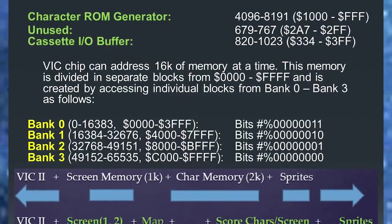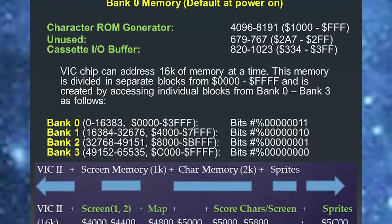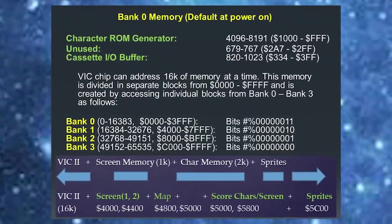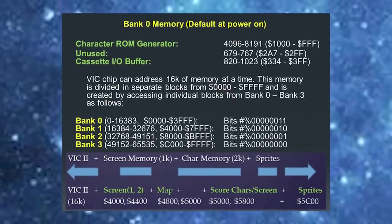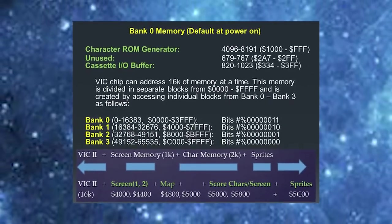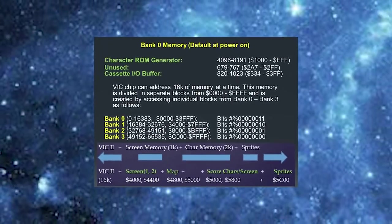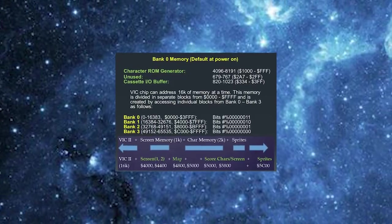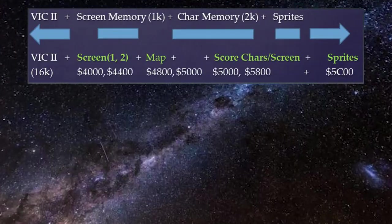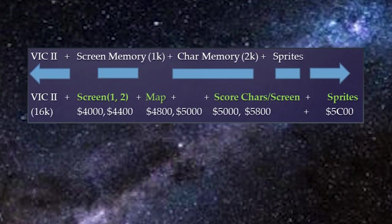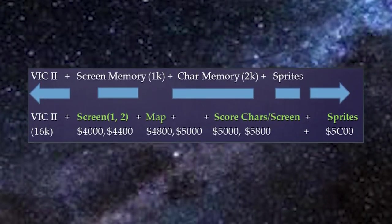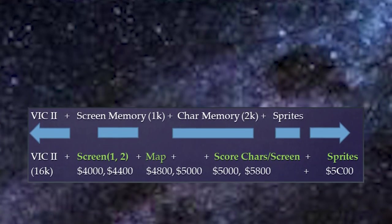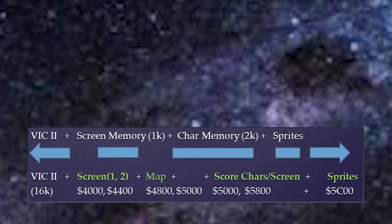Examine the arrow diagram, and hopefully you can see how our project spaces graphics memory according to the order of screen memory, map, character memory, score characters, and sprites. I have divided the arrows up so you can hopefully understand those pockets of memory and their length for the RAM memory contained there.